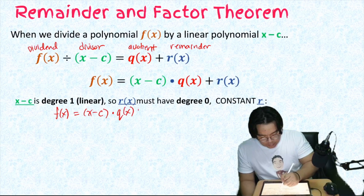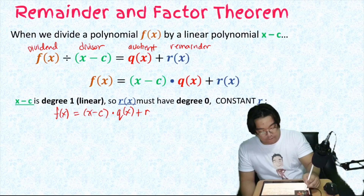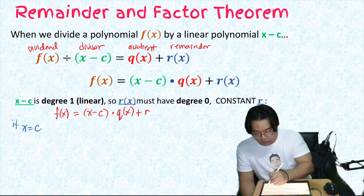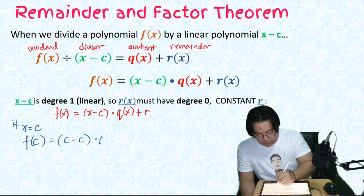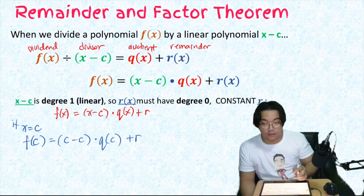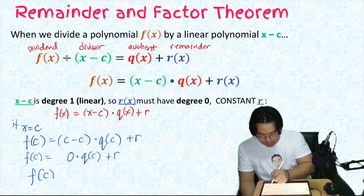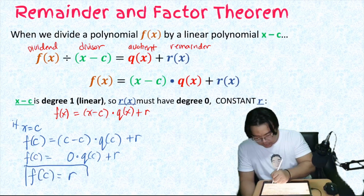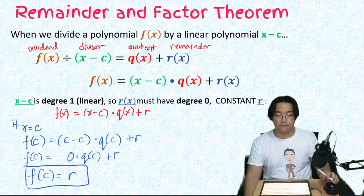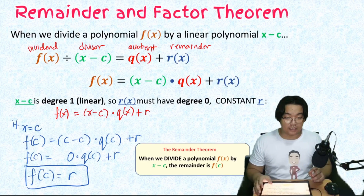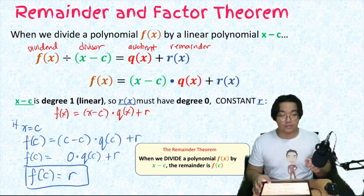If x is equal to c, then we can evaluate the function as f(c) = (c minus c)·q(c) + r, which simplifies to f(c) = r. With that proof, we can now say that when we divide the polynomial f(x) by (x minus c), we can simply get the remainder by substituting the c value into the given polynomial. That is the Remainder Theorem.